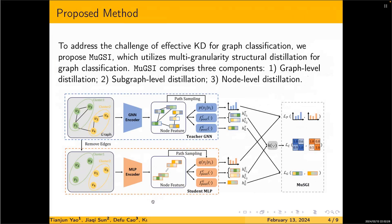To address the challenge of KD for graph classification, we propose a new framework called MUXIE, comprising three components: a graph-level distillation component, a subgraph-level component, and a node-level component. The overall framework is illustrated in this slide.